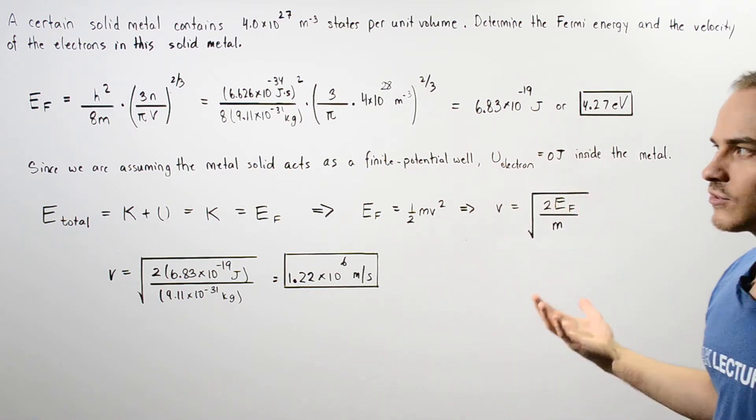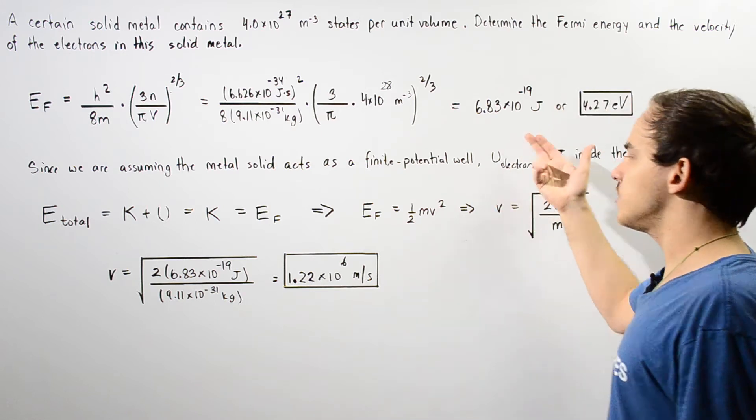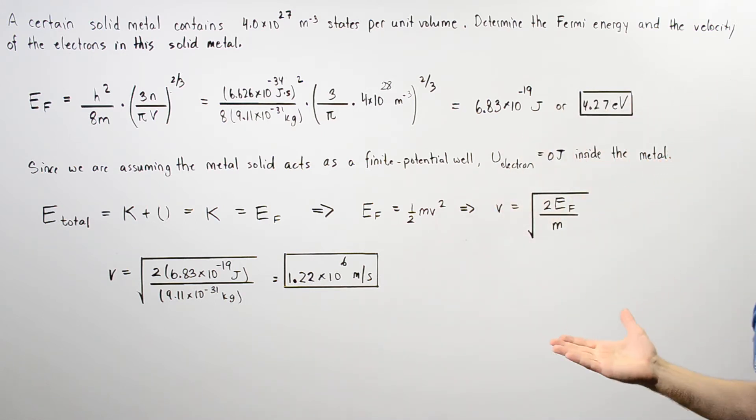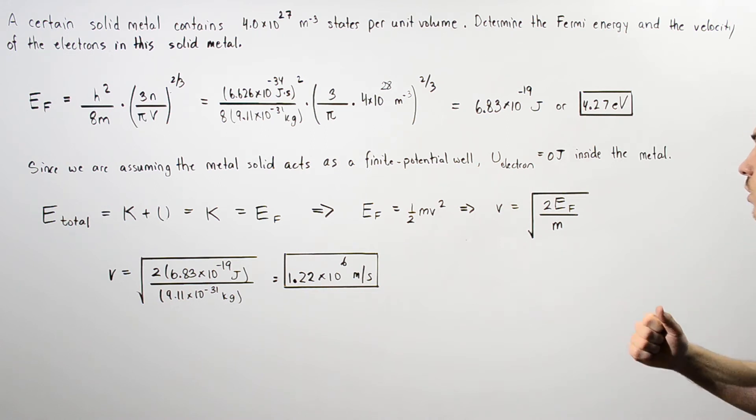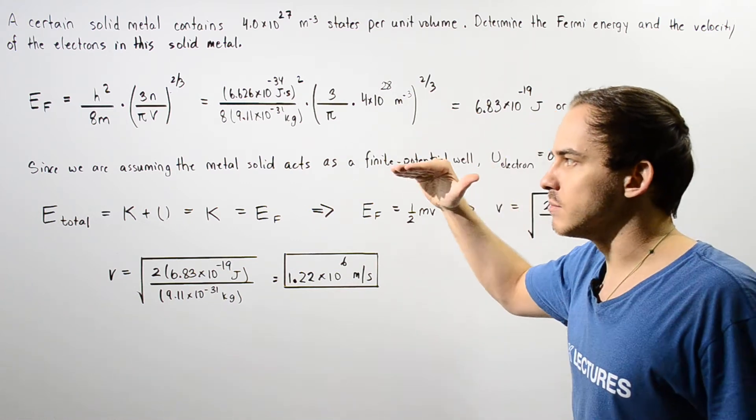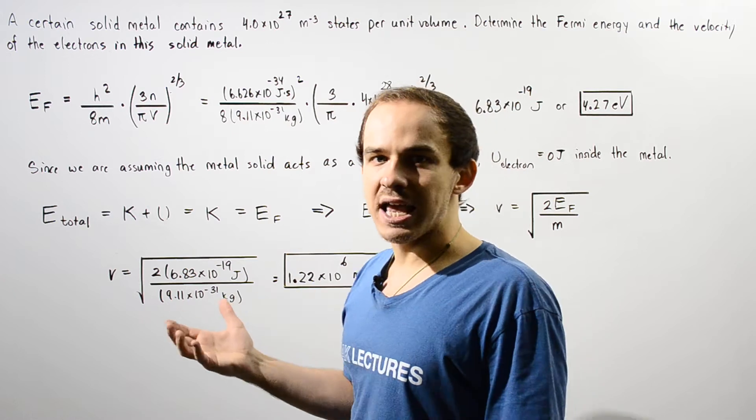The joules cancel and we're left with about 4.27 electron volts. This is the maximum energy quantum state that an electron can go into in this particular solid metal, assuming that the temperature of our solid metal is at zero kelvins.